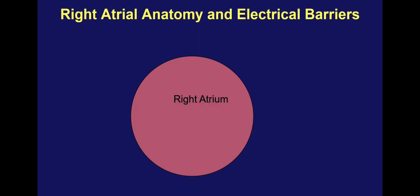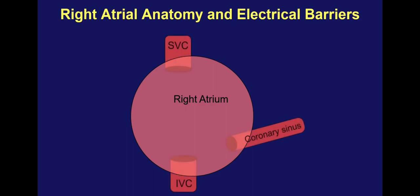The right atrium is represented as a simple sphere. Blood enters and exits this chamber via structures that act as natural electrical barriers. There are three veins that bring blood into the right atrium: the superior vena cava, the inferior vena cava, and the coronary sinus, which enters the inferior aspect of the interatrial septum. Blood exits the right atrium via the tricuspid valve.